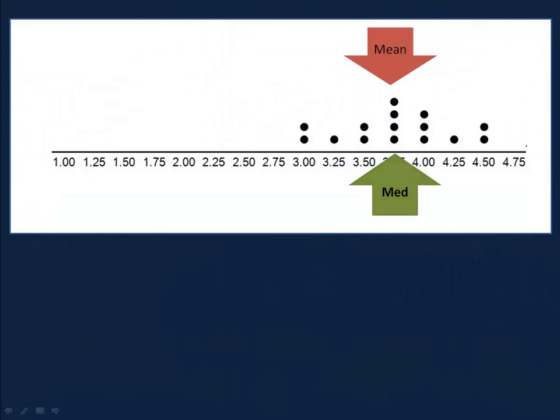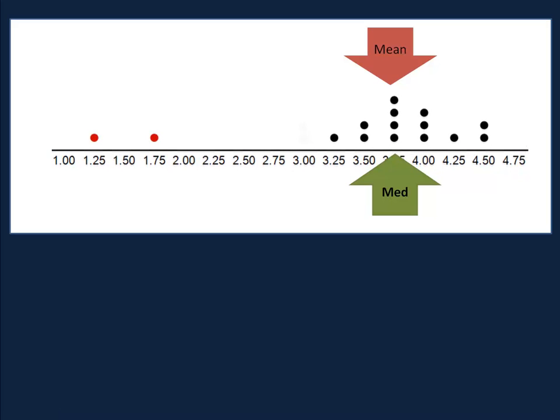Really, once again, this is the same data set we started with, except in the case of Brighton High School, we took the two people that had $3 and we turned them into outliers. Notice what happened to the mean.